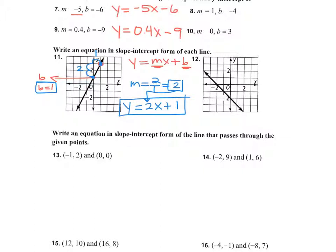Let's do number 12. If I want to put it into slope-intercept form y equals mx plus b, I need m and I need b. What is my b right now? What's my y-intercept? Where am I hitting the y-axis? Negative 2 — okay, that's right here. So b is negative 2. And then you need to find your slope.